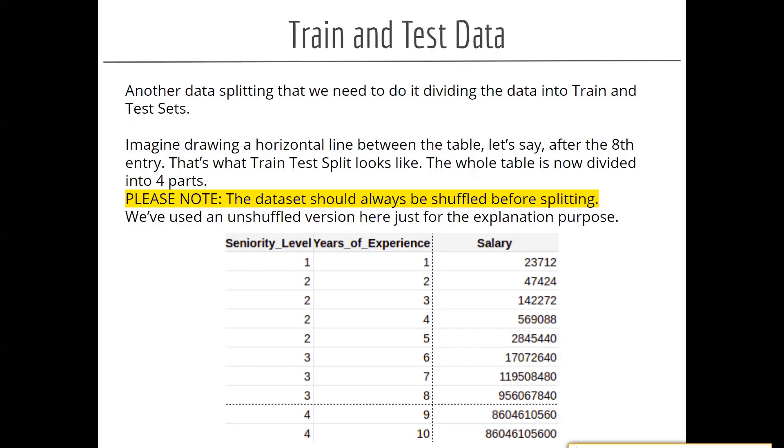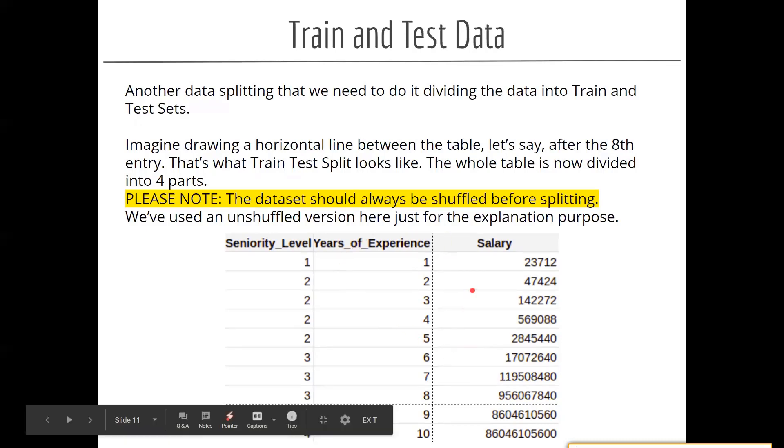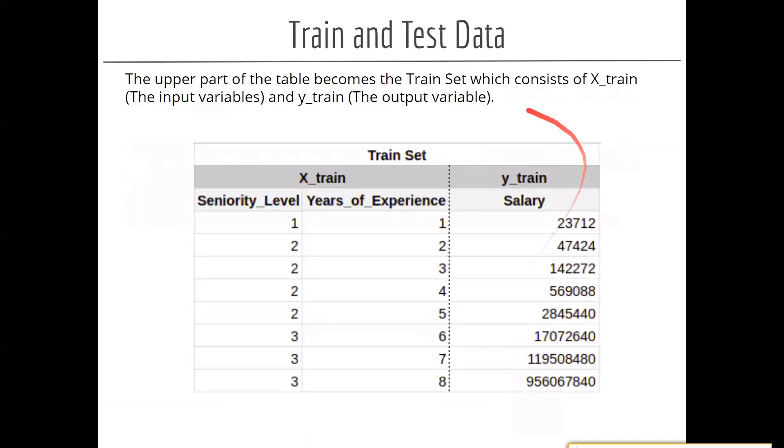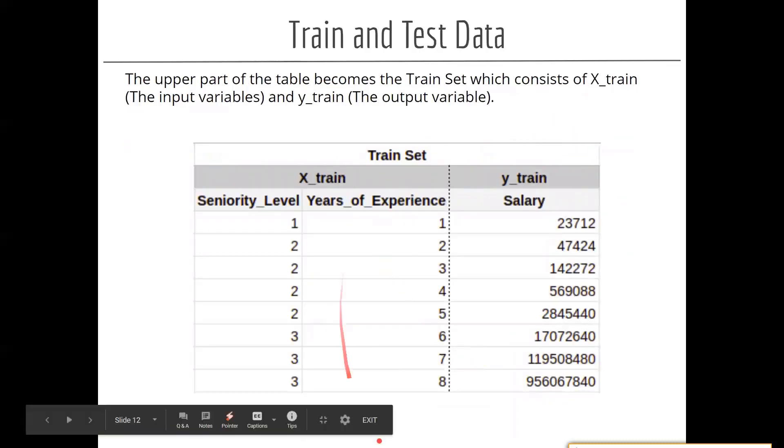And then we test our model on the rest of the 20 or 30 percent data. In this particular case, what we have done is we have taken a ratio of 80-20. So 80 percent becomes your test data and 20 percent becomes your train data. This is your train dataset which has only eight values, and test dataset has only two values.